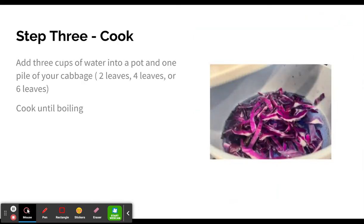Step three is to cook. So you are going to take your pot and add three cups of water and one pile of your cabbage leaves. So that would be your pile of two leaves, four leaves, or six leaves, and then you're going to cook that until it boils. It should look something like this after it's finished.